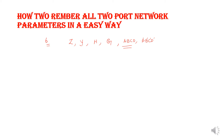I am going to explain how to remember the Z parameter and Y parameter. For that, first of all, I have to draw the letter Z. Here I have to put V1, V2, then I1, I2. So to write the Z parameter, I mark the arrow here for V1, V2, then I1, I2.